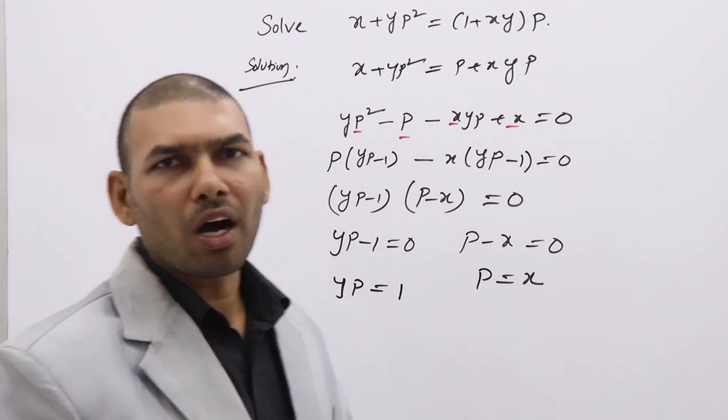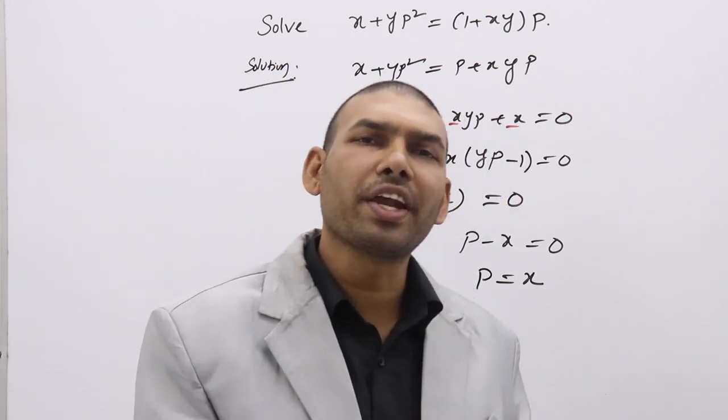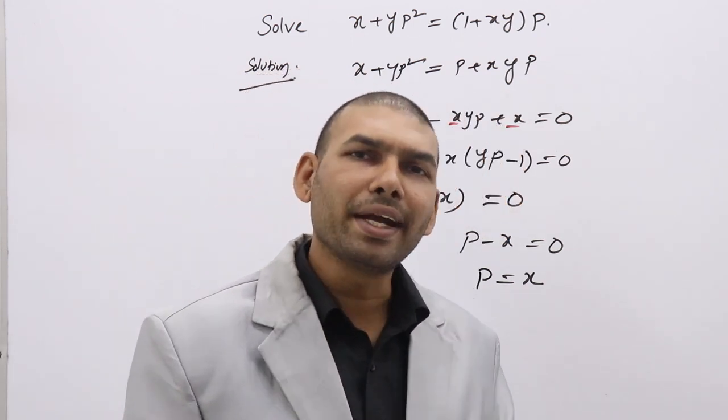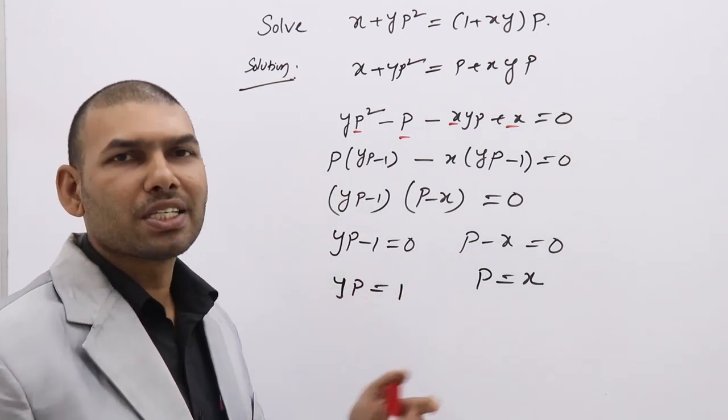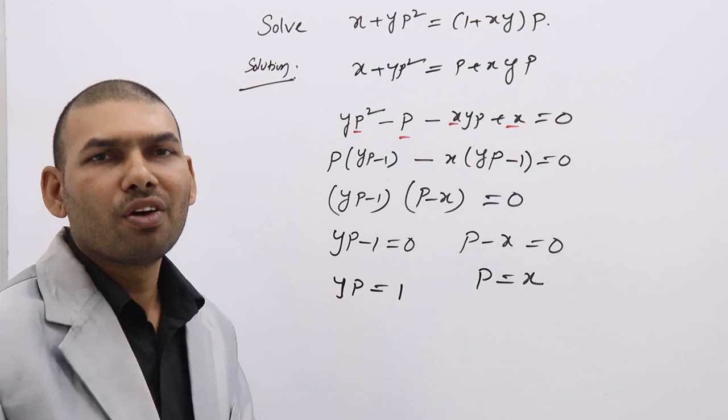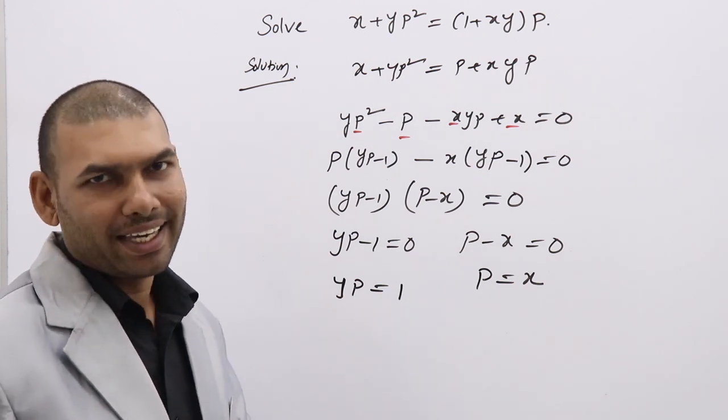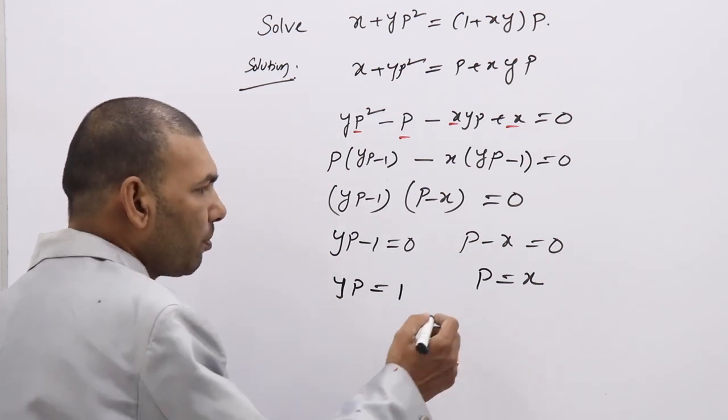So these two can be solved using variable separable because that is a differential equation of first order. You don't have p squared, p cube like that. p is of first order, that is comes under first order, first degree differential equation, which is in the form variable separable very clearly.